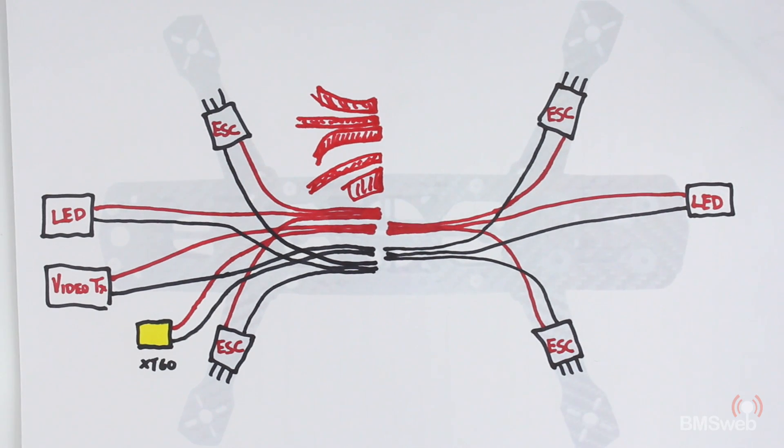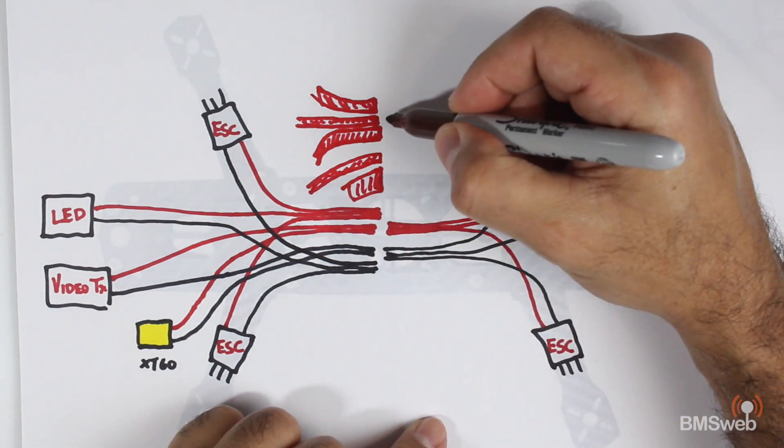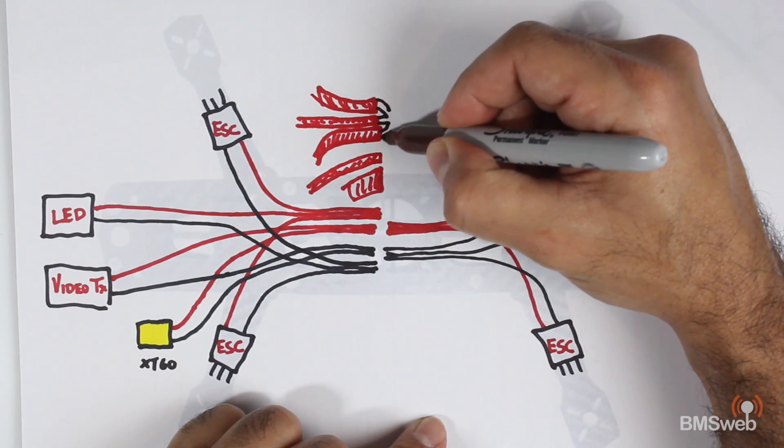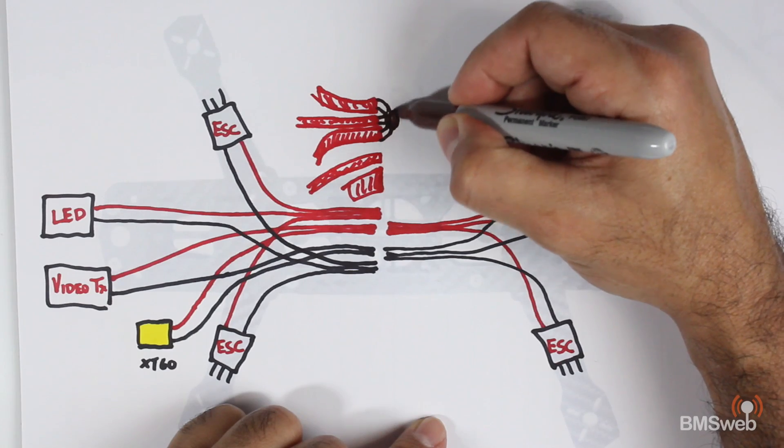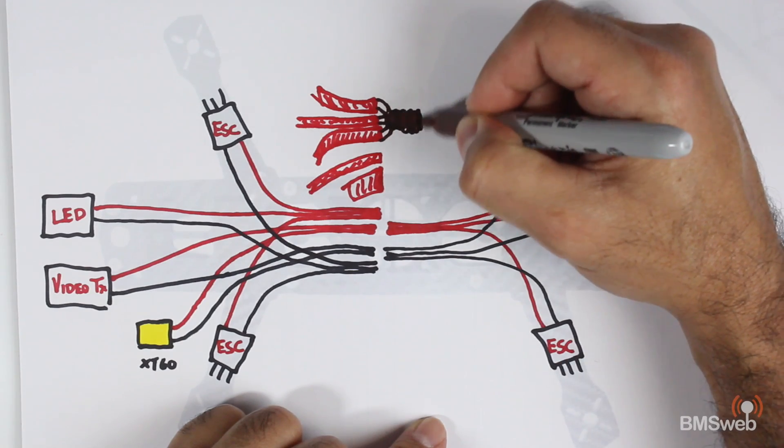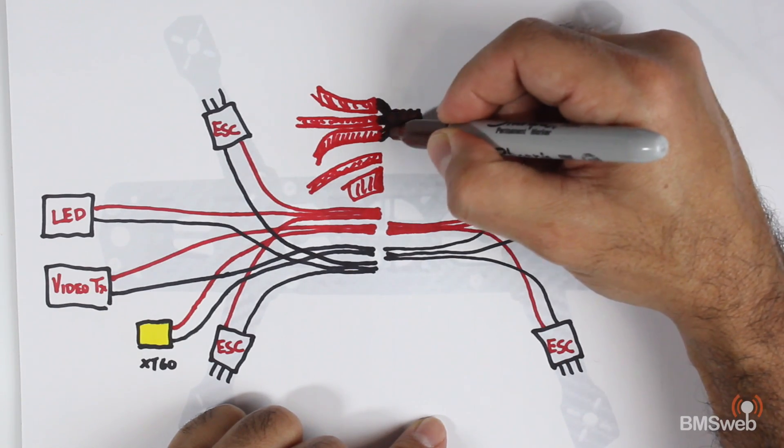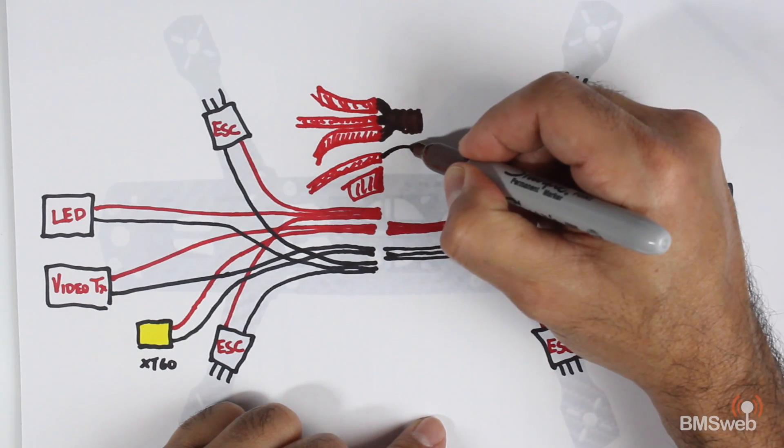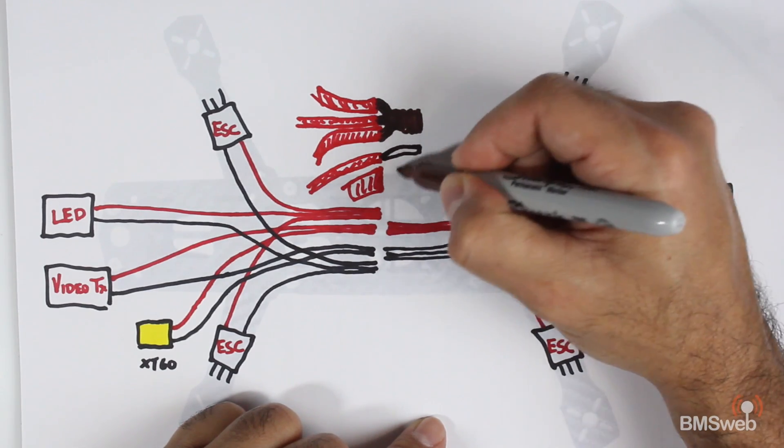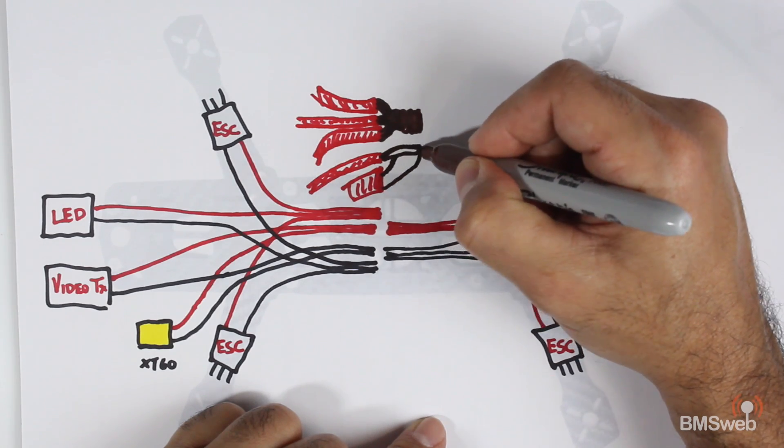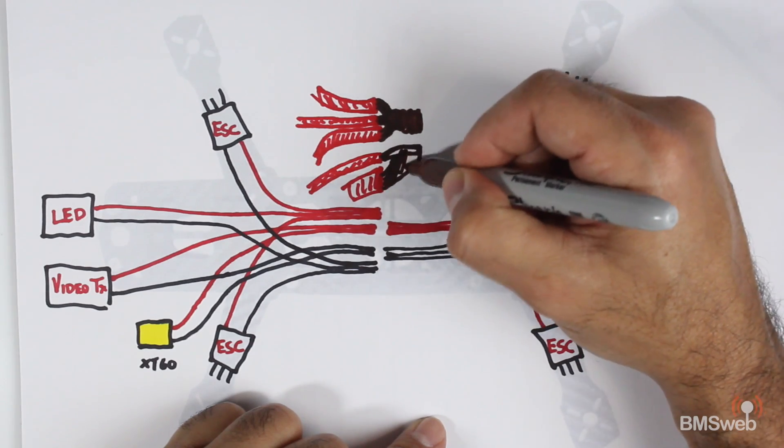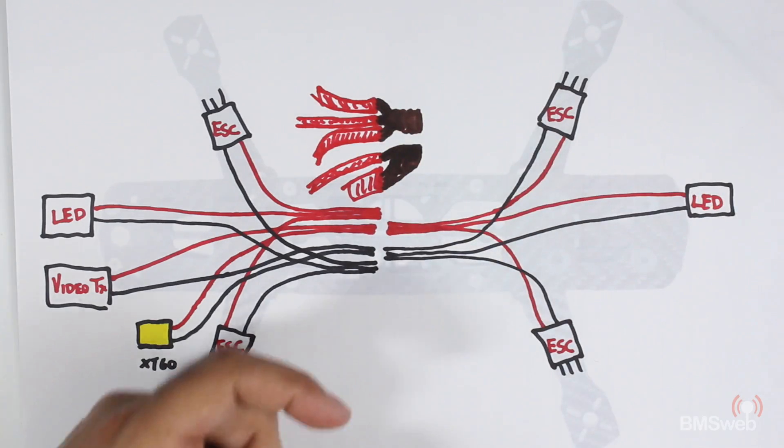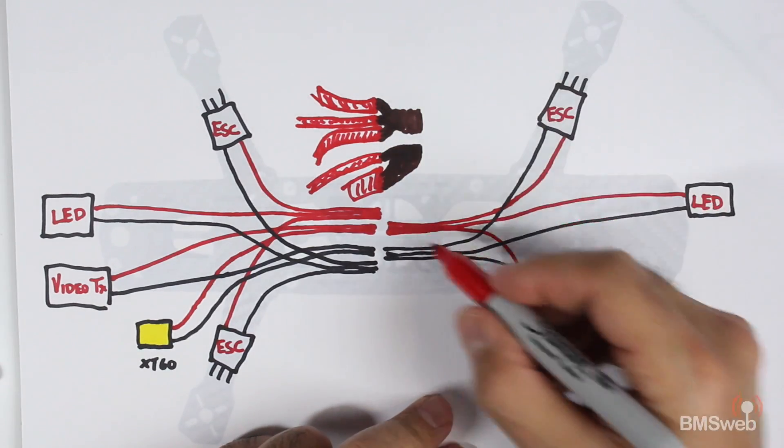This goes to your video TX and a much bigger wire which goes to your XT60 connector. So these wires are going to come out like so, and you're going to twist these together and then tin it. The same thing is going to happen here.